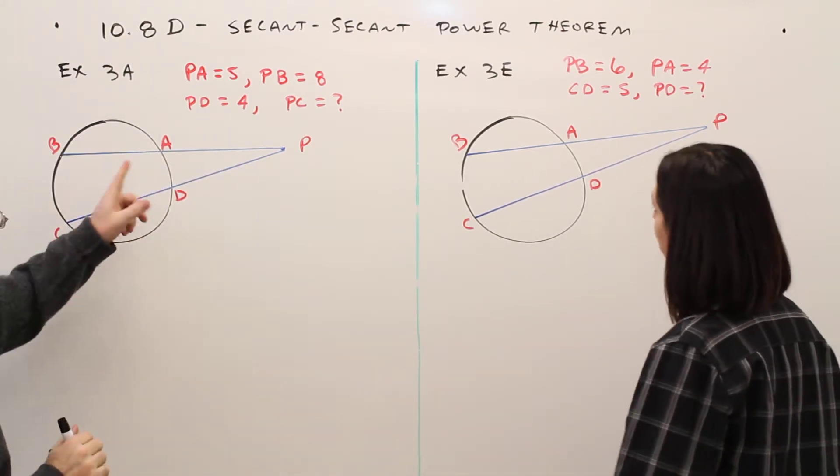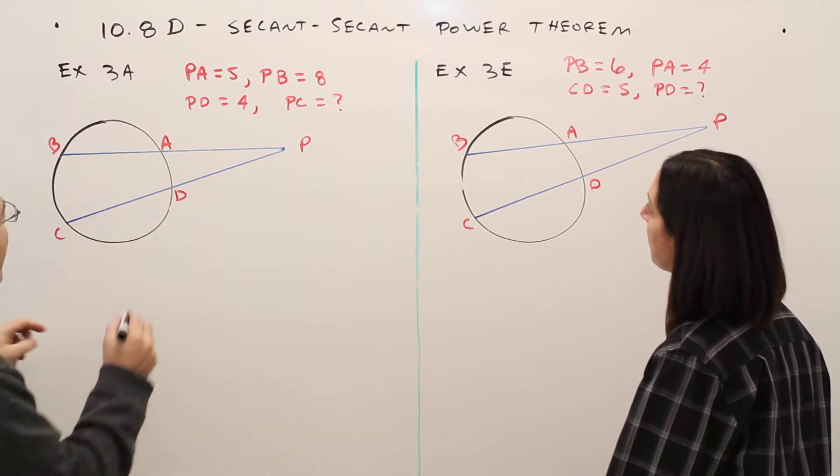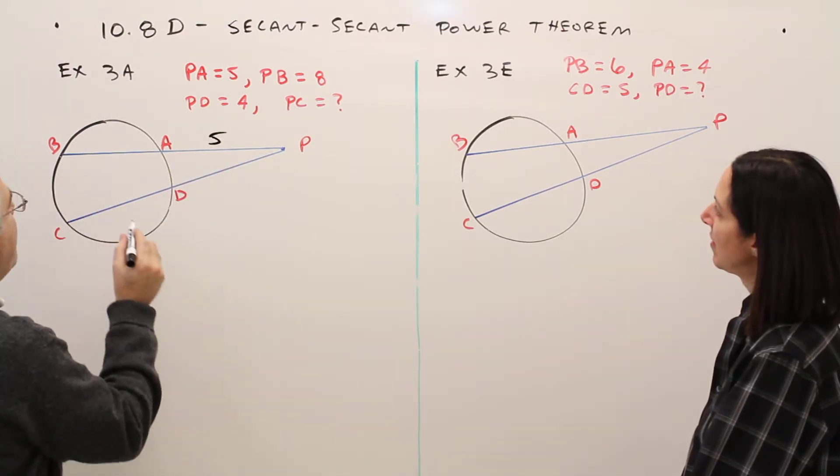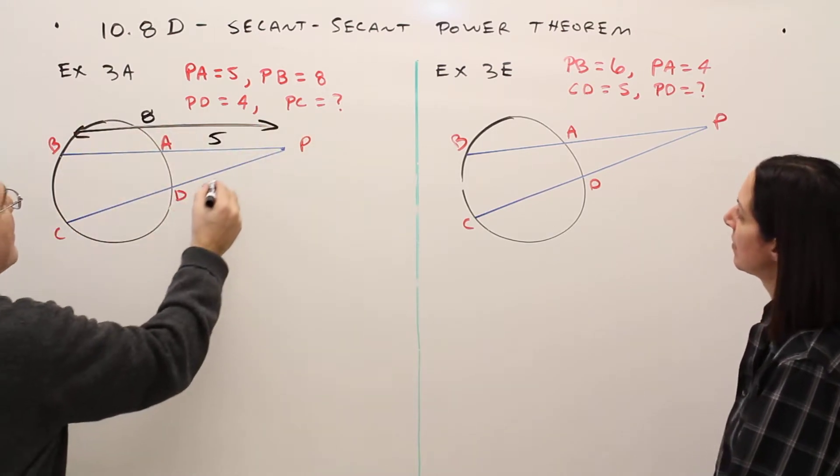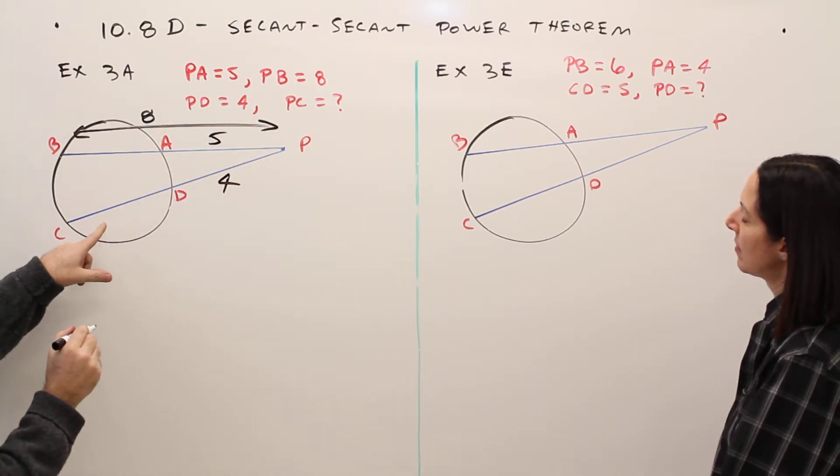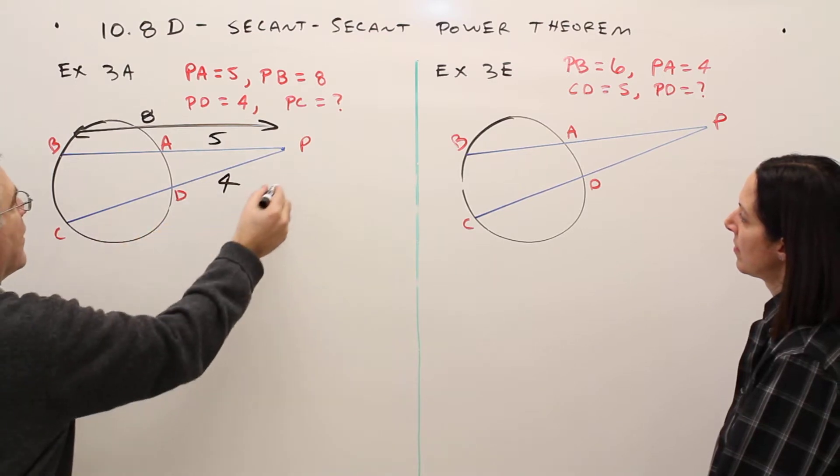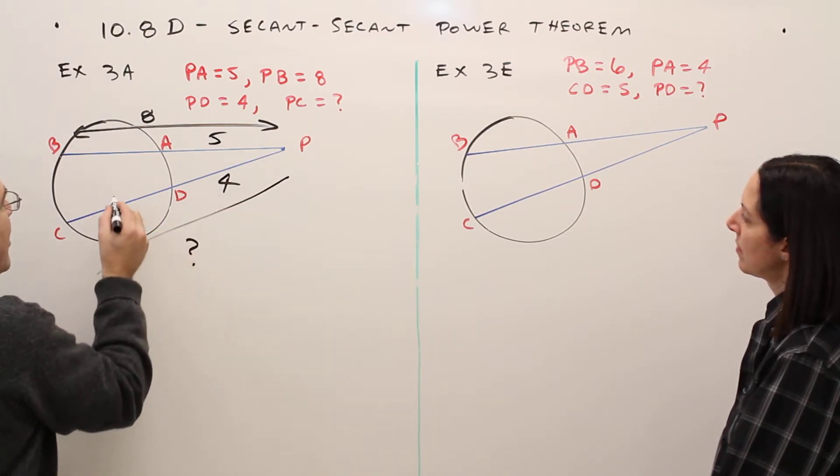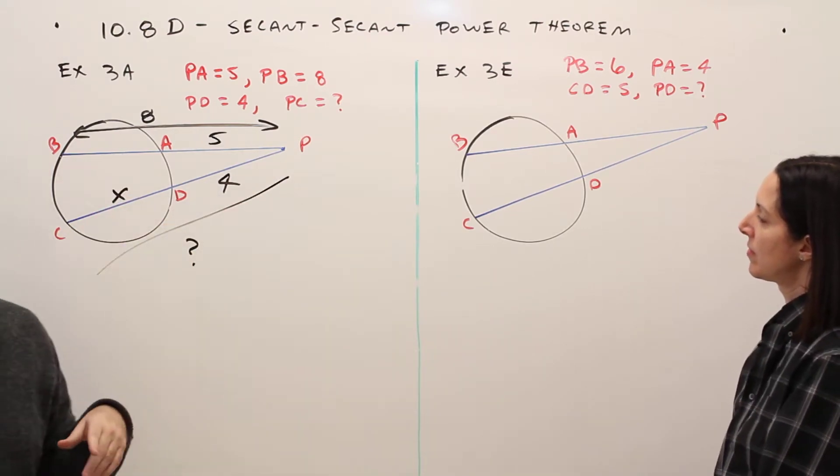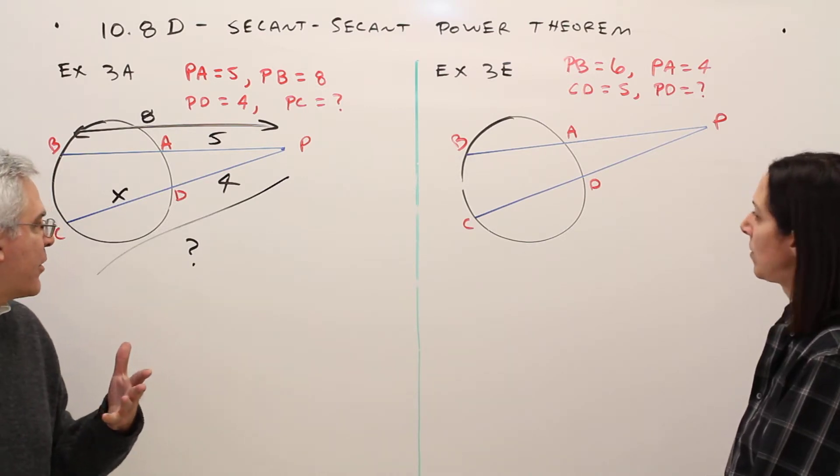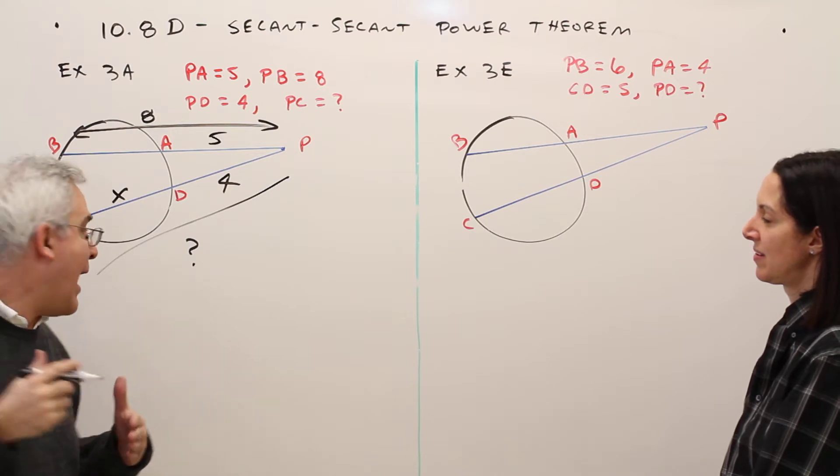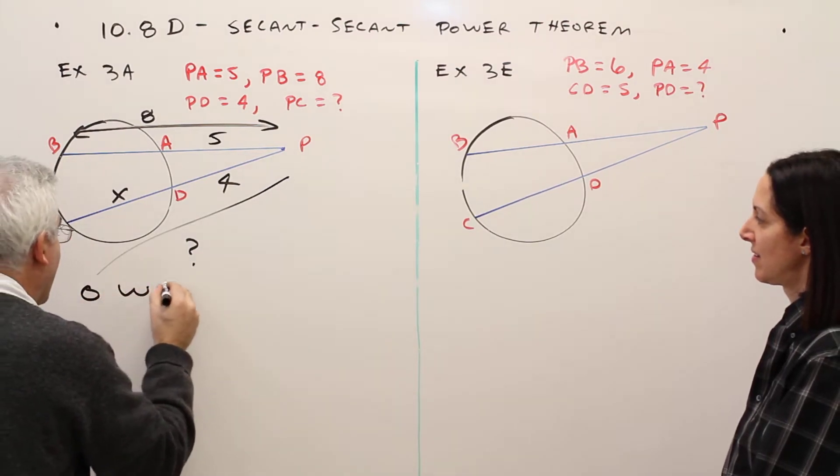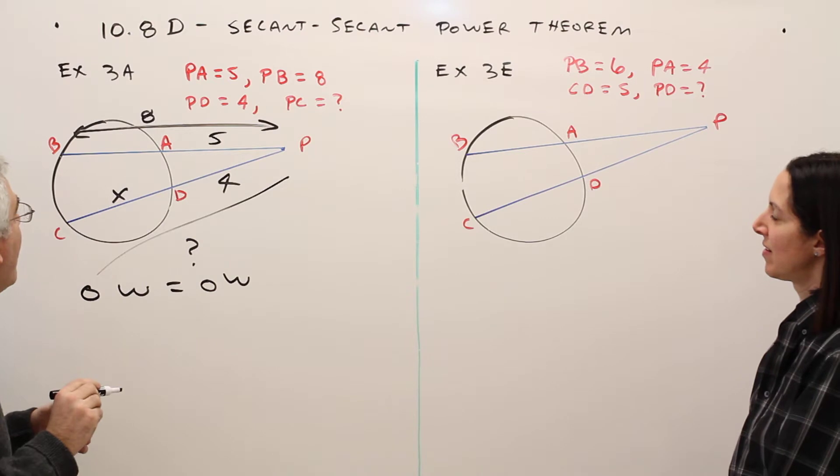Alright, so example 3A. PA is 5, PB is 8, PD is 4, and they want to find PC. This thing right here. So what I'll do is I'll just put X in for that part and work the problem out. Hopefully you know by now, OW equals OW. Outside times whole equals outside times whole.